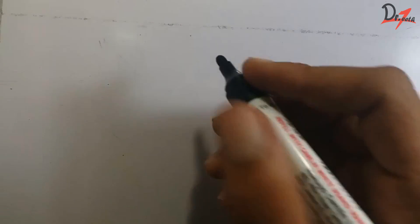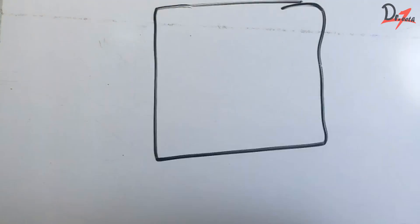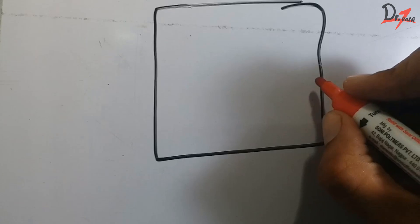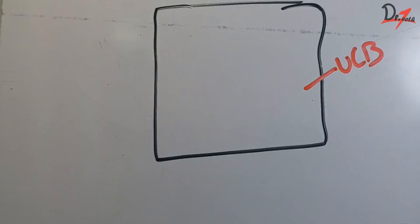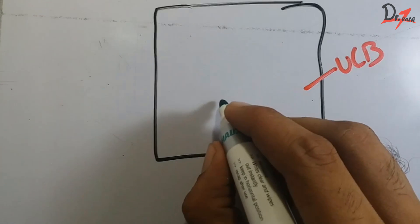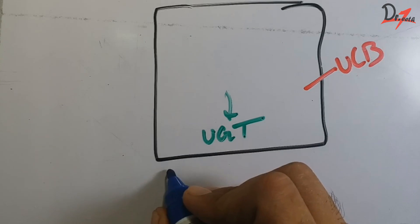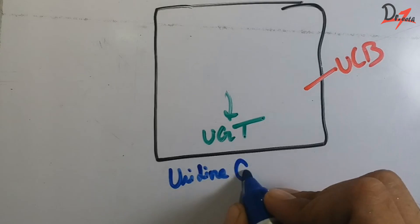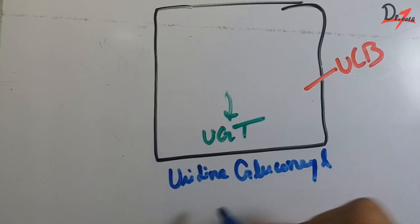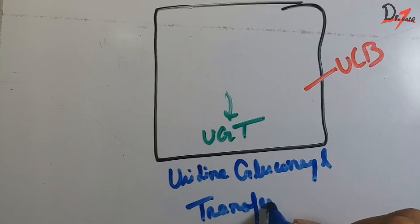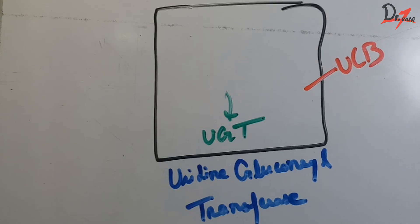In a hepatocyte, this was unconjugated bilirubin because it is fat soluble, not water soluble. After coming to the hepatocyte, there is an enzyme waiting — UGT, which stands for Uridine Glucuronosyl Transferase. This enzyme will convert unconjugated bilirubin into conjugated bilirubin.